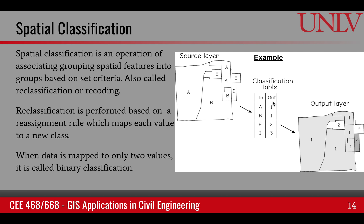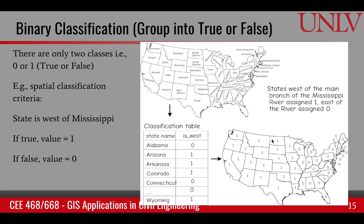When the recoding is done to two values, it's called binary classification. For example, in this case we have three values, but if there were only two, it would be called binary classification. In binary classification, the output is only true or false, or 0 or 1.